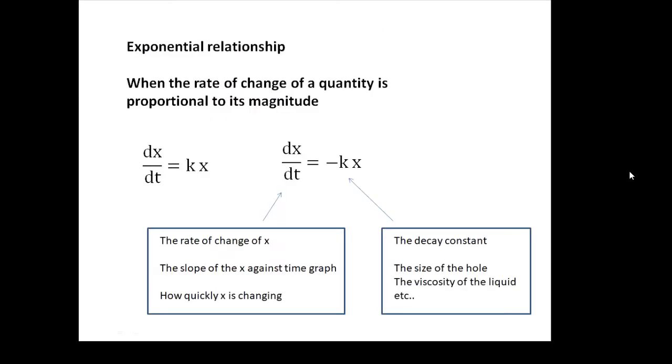An exponential relationship. This is important. When the rate of change of a quantity is proportional to its magnitude. Now, I've put two equations here. You'll notice the difference between them. One's got a negative sign. The one on the left, we're not bothered with. That's an exponential growth. The one that we are concerned with is the one with the minus. That's an exponential decay.